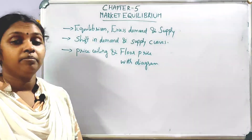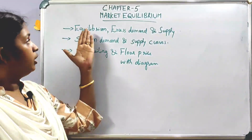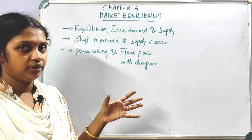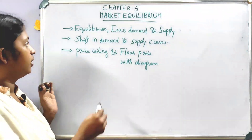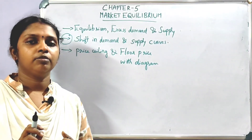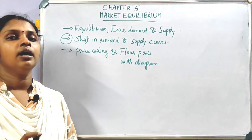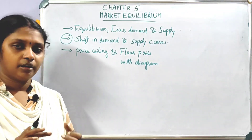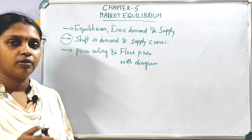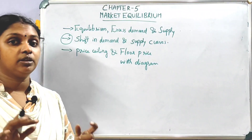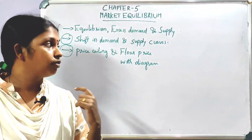The fifth chapter is Equilibrium. The topics are Equilibrium, Excess Demand and Supply. We will study what is excess demand and excess supply, and also Price Ceiling and Price Floor with diagrams.